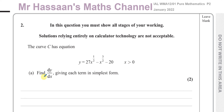We need to find dy/dx, giving each term in its simplest form. Before we start differentiating, we should always make sure the expression is in the right form. In this case, all the x terms are in the numerator and written in index form, so we can simply find dy/dx right away.